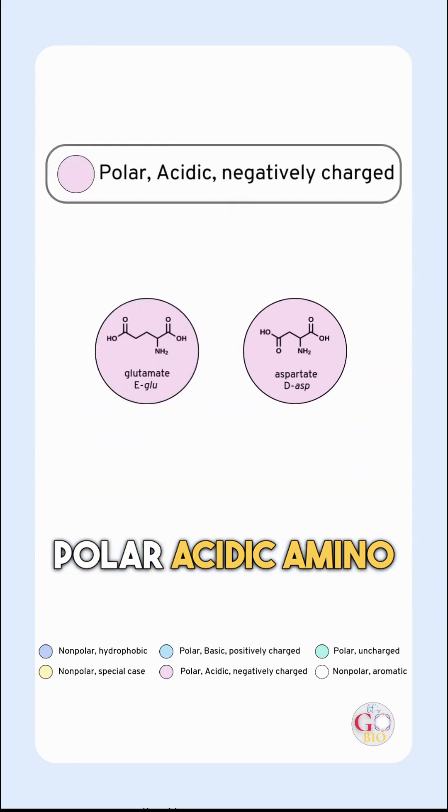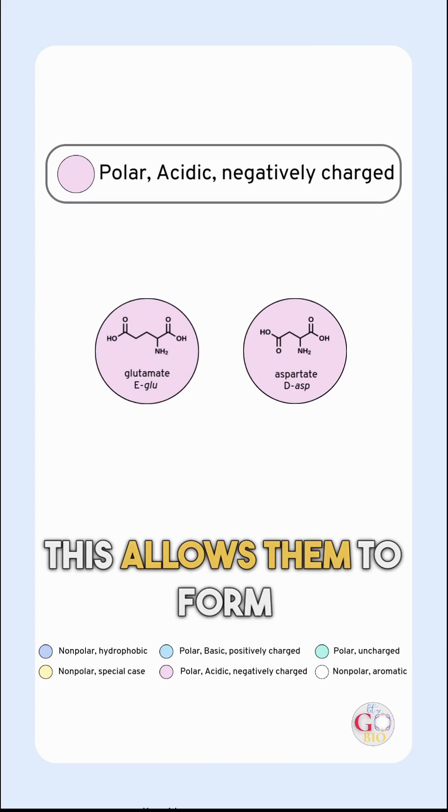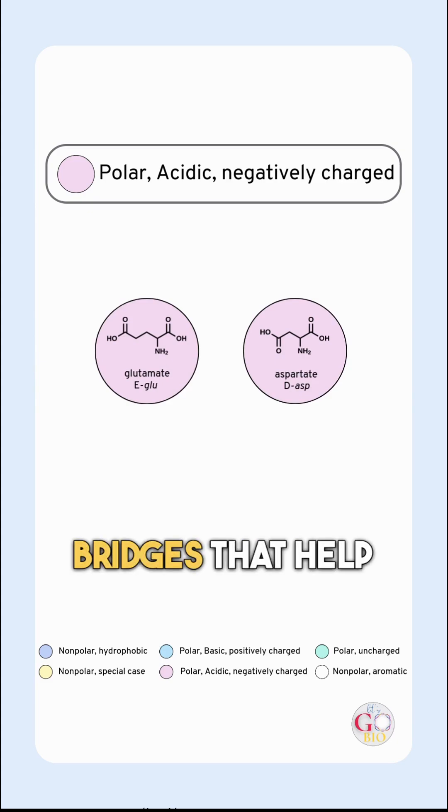Polar acidic amino acids, aspartic acid and glutamic acid, carry a negative charge at physiological pH. This allows them to form ionic bonds or salt bridges that help stabilize protein structures.